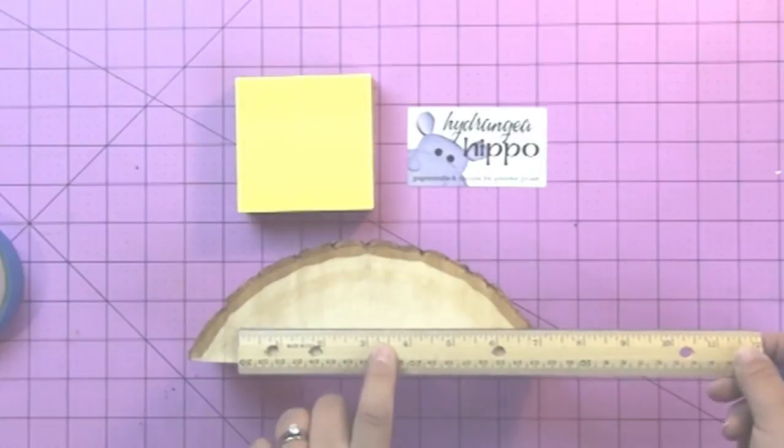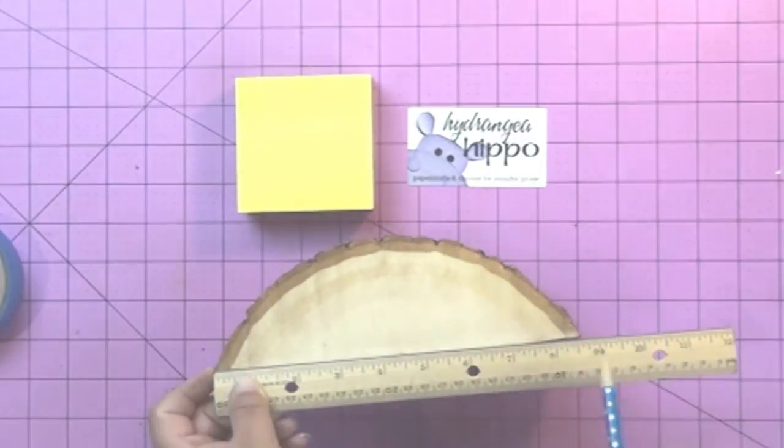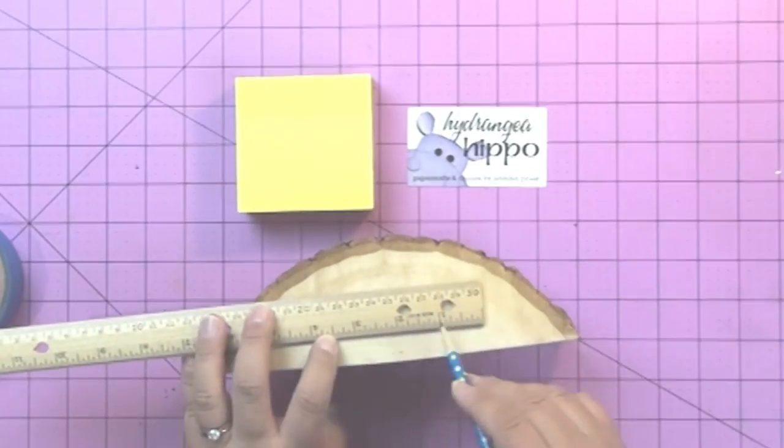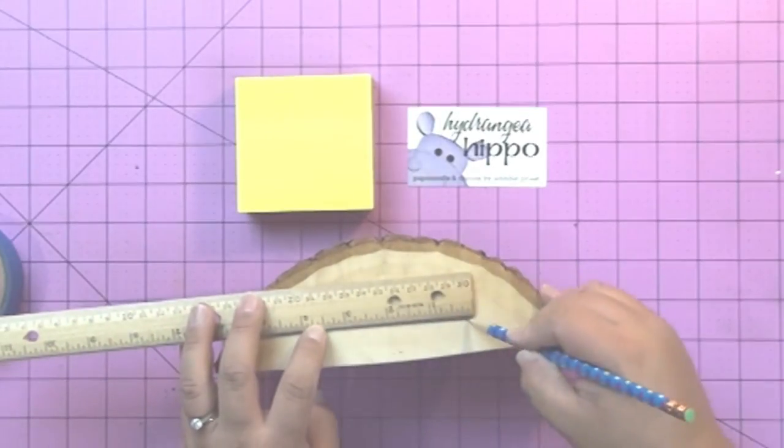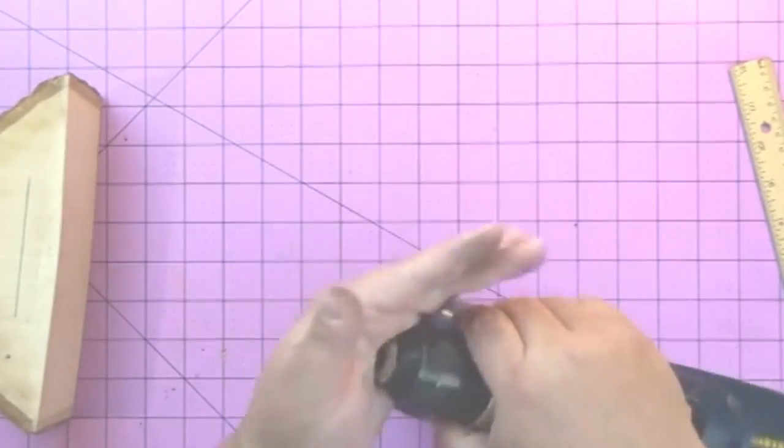Then I measured my business card and my post-it notes. These are what I want to put in my slot. They're about three and a half inches long, so I found the center of my wood slab and then drew a three and a half inch long line with a pencil so that I could use that to guide my router when I get to that point.